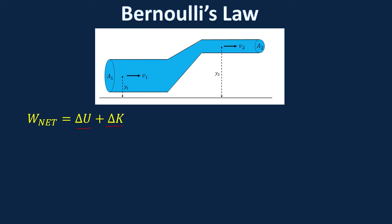Let's look at the net work being done in this system. On both sides of the pipe there are pressures — pressure at one and pressure at two — because you have forces going in on both sides, F1 and F2. To find work, you have force times distance. Taking a snapshot in time, the fluid goes through a distance delta X on both sides. Because mass flow rate is constant, it's a smaller delta X on the right side to maintain constant mass flow rate.